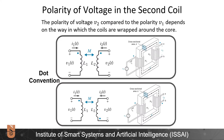The polarity of voltage V2 compared to V1 depends on the way the coils are wrapped around the core. We might wrap them clockwise or counterclockwise. If both coils are wound the same way, we use a dot convention and place the dots on the same polarity. If they are wound in opposite directions, we place the dots on opposite polarities. This is called the dot convention.